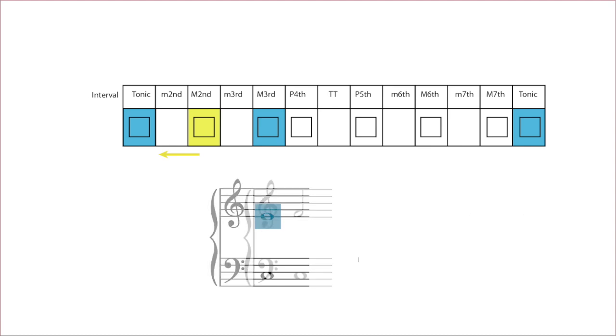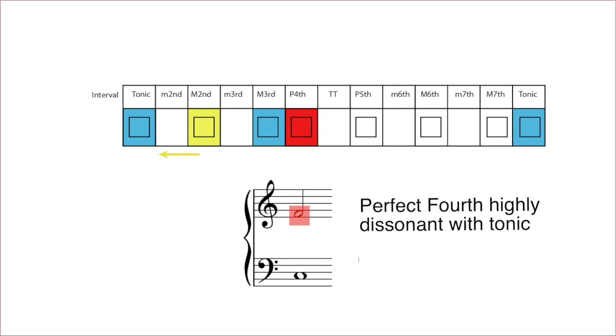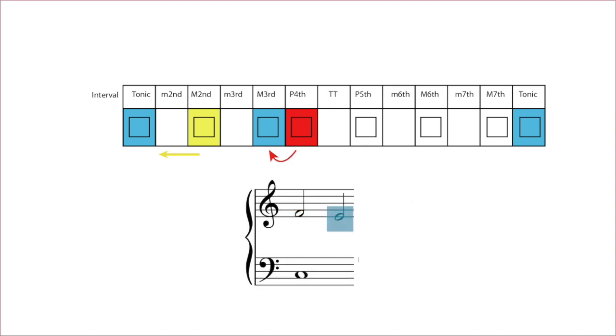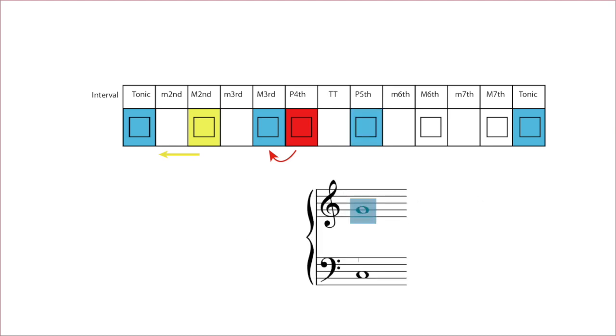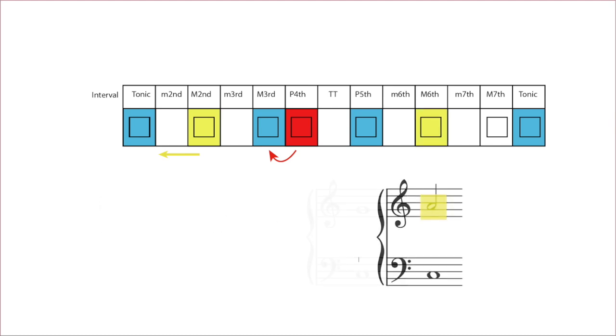The fourth scale degree, not so consonant. There's a kind of tension there, a rub, against where we think it should be, which is this. Four to three. Tension. Resolution. The fifth. Totally fine. Couldn't be more consonant. The sixth. Again, kind of like the second. Seems like it kind of wants to fall down to the five. Tension. And resolution.